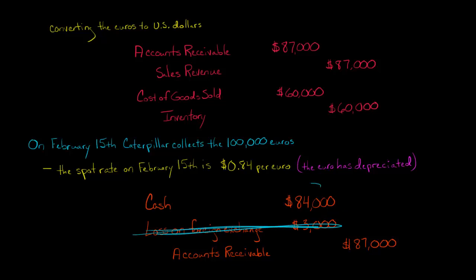So if they're getting $84,000 cash, and they need to take the receivable off, the receivable was on the books at $87,000, and now this money is no longer receivable, so you've got to credit the receivable for $87,000.